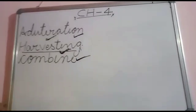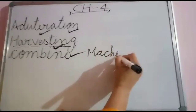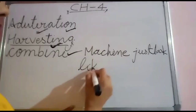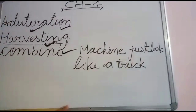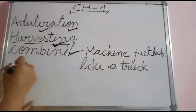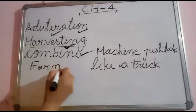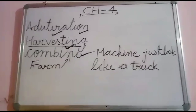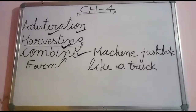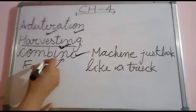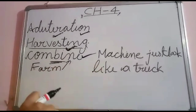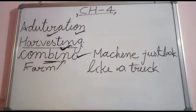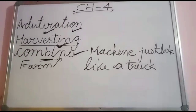Next word is combine. Combine is a farm machine that looks like a big truck. This combine performs two works simultaneously — harvesting and threshing. Harvesting means cutting and gathering, and threshing means the grains get separated directly from the crop. So the name of that machine is given as a combine because it combines two works together.